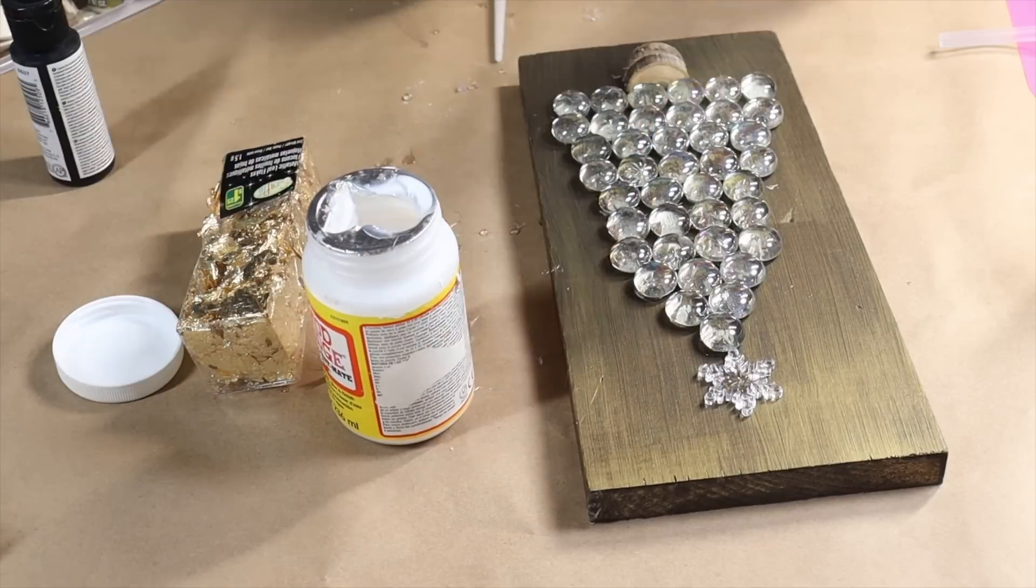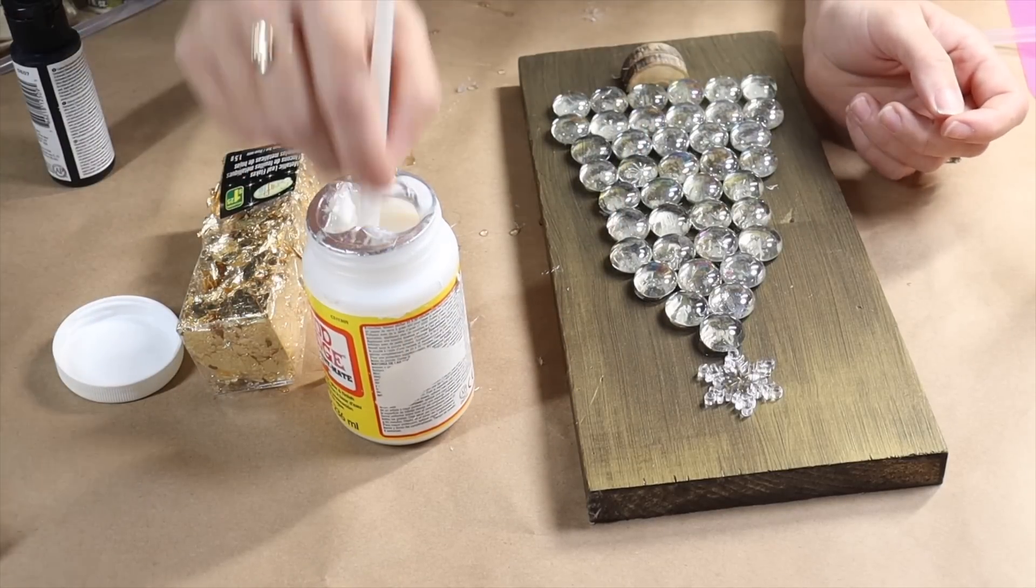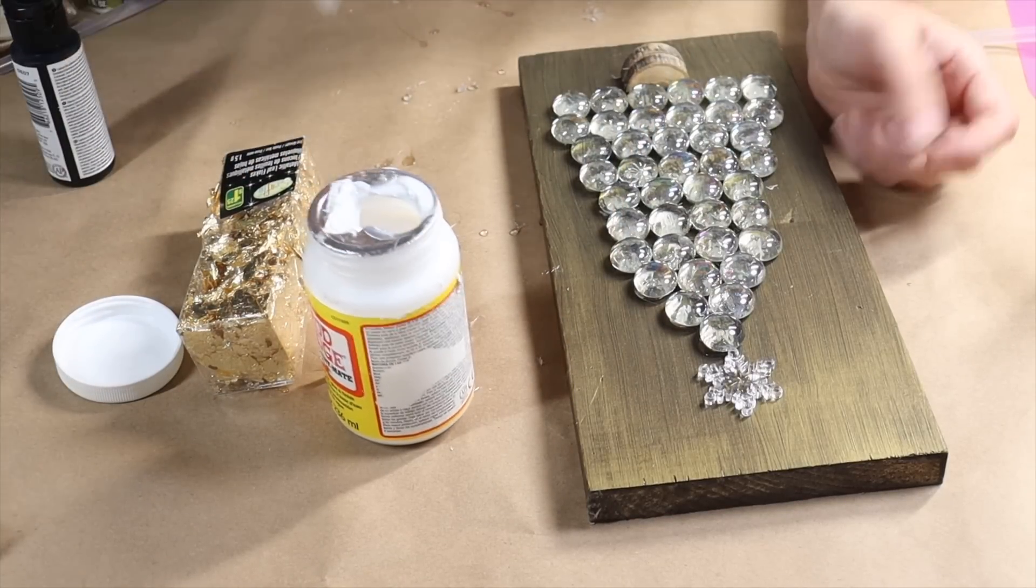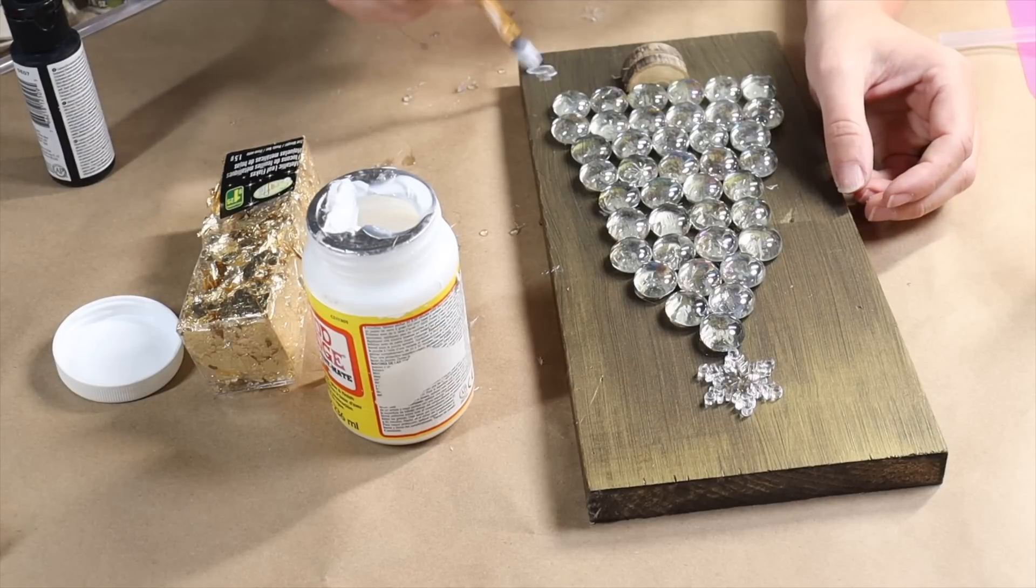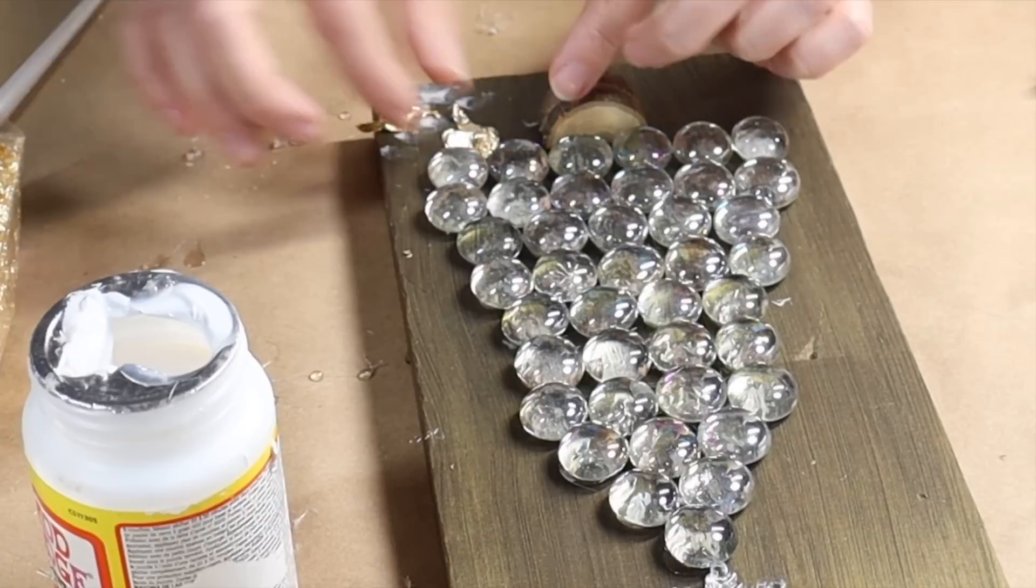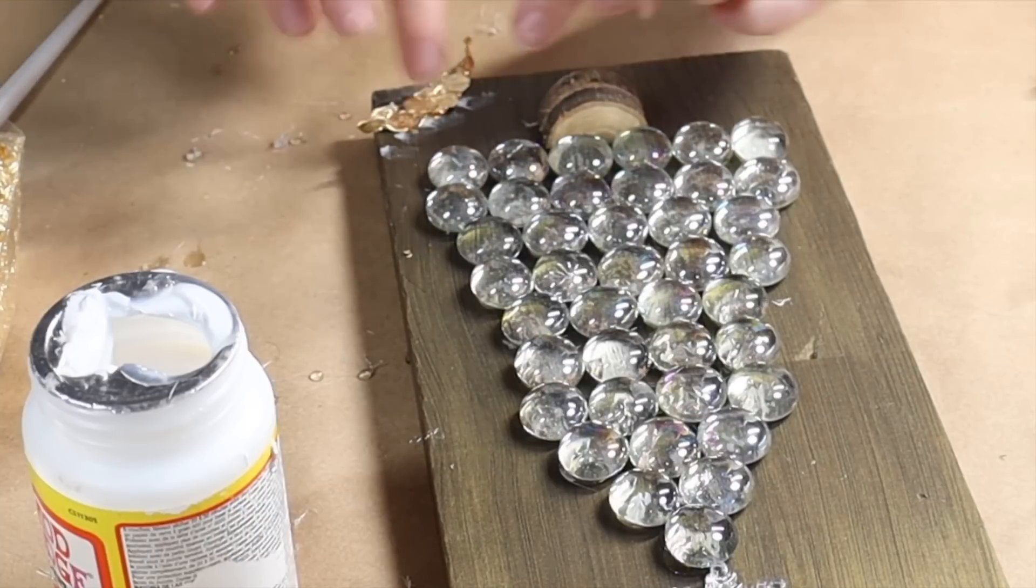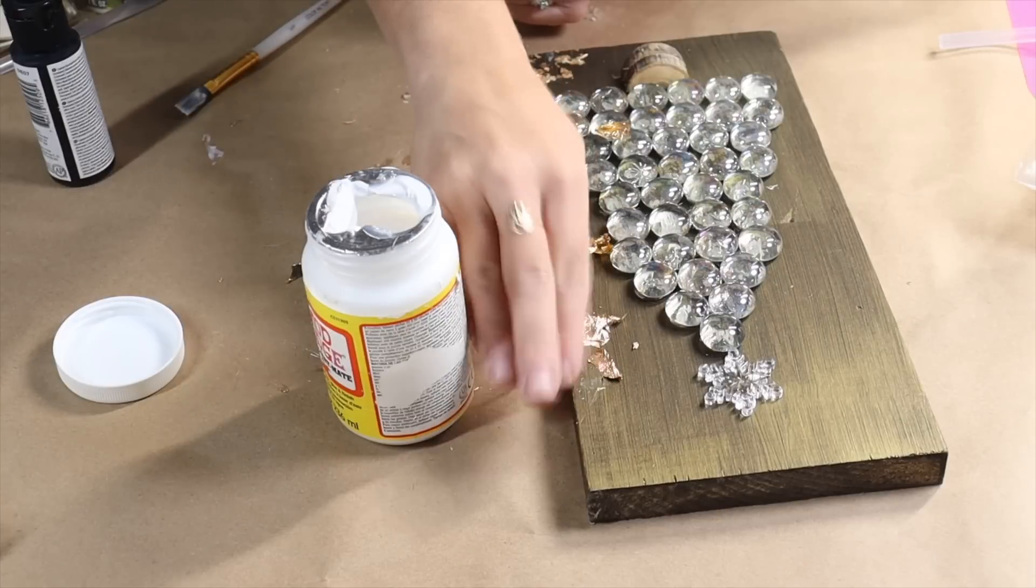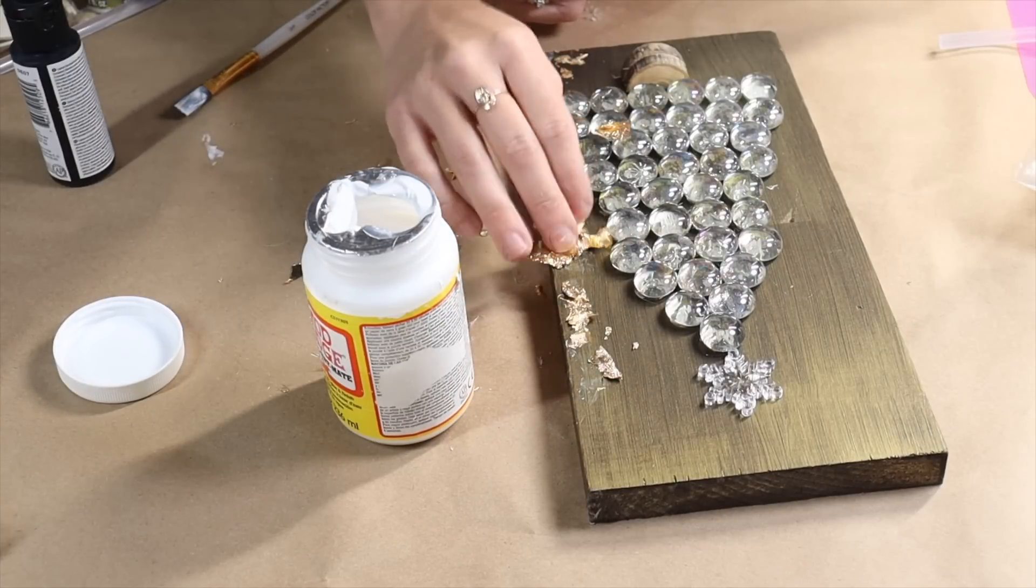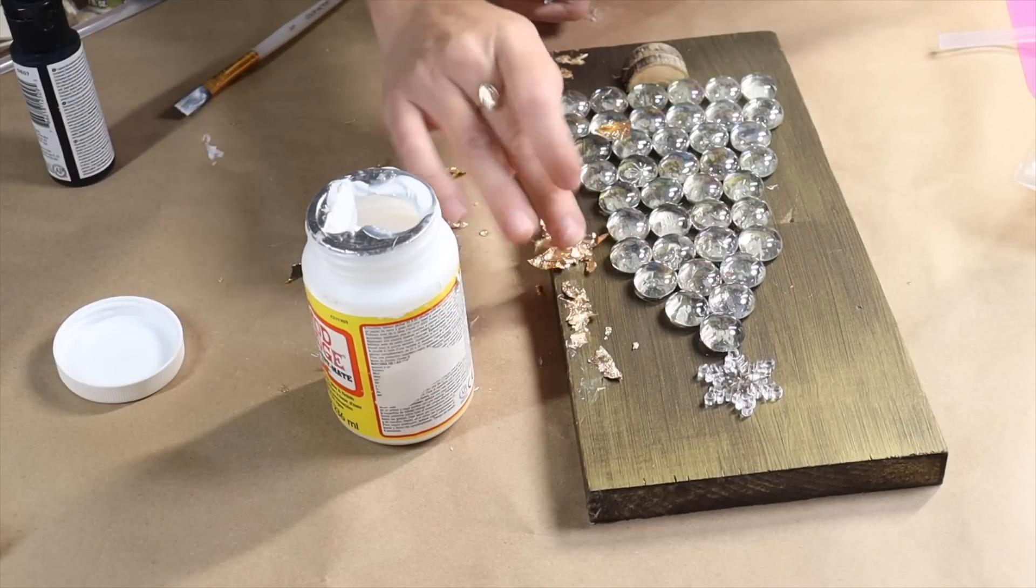So I came in with some Mod Podge and some gold foil, and I just did a gold leafing foil technique around the edges to create a nice classy and elegant border. This just gives my project a little more glam because I felt like it needed just a little something extra to glam it up in time for Christmas.